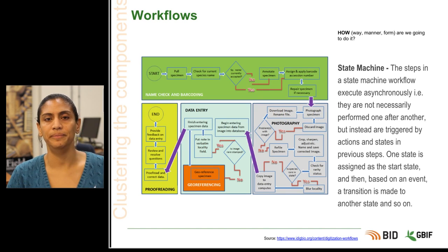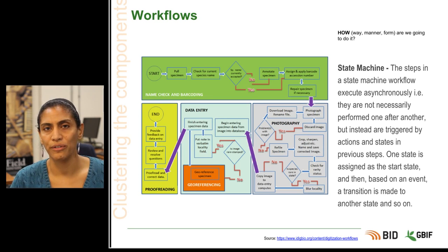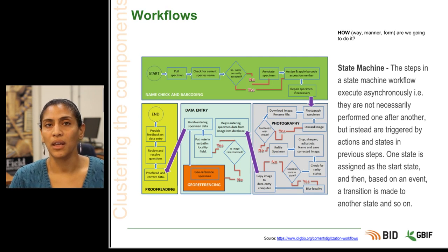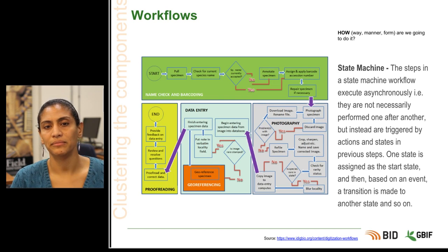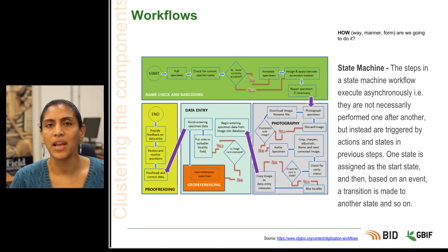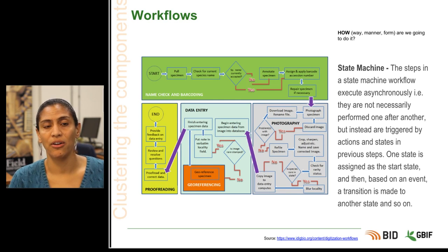The last workflow example is called state machine. This is probably the most complex form and is most often found in machinery, industry, and programming logic; however, there are parallels and uses in the natural history world. Here, the steps within each task cluster happen asynchronously — they are not necessarily performed one after another, but can be triggered by actions and states in previous steps. One state is assigned as the start state, and then based on a particular event, a transition is made from one state to another. Taking this example from Allard in 2012: if the photography department only has space for 60 herbarium sheets at a time, the name checking task cluster can continue to prepare specimens but not pass them along to the photography cluster until there is space again, while other clusters carry on unimpacted.